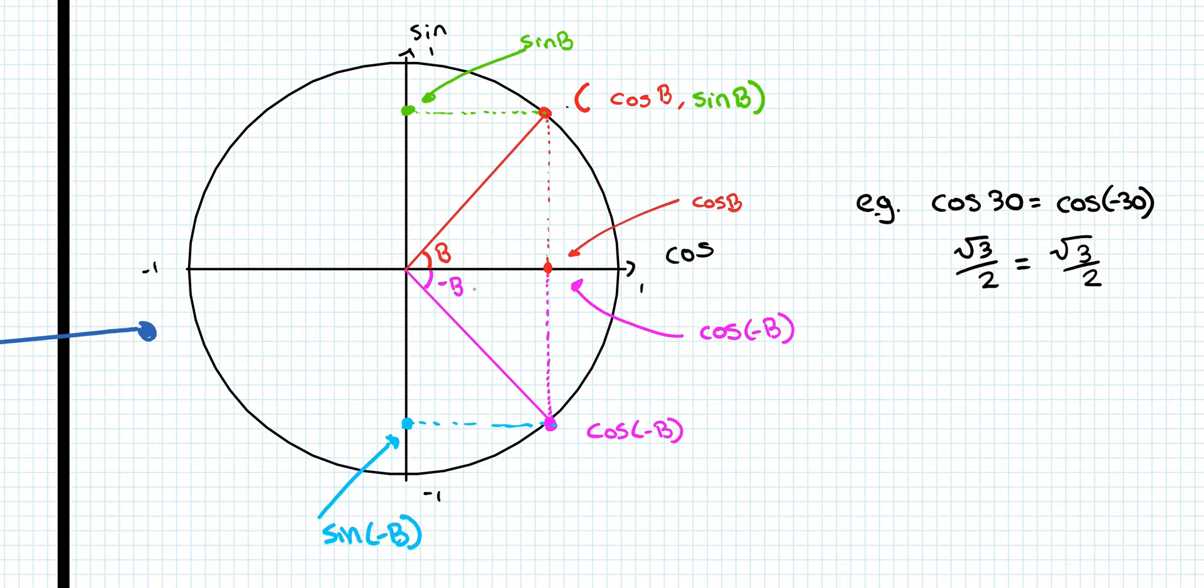In purple I have minus B, the angle (-B) drawn in. Minus B is always measured from the positive side of the x-axis. So the minus would be down here. And then the cos(-B) is straight up to the x-axis. And we'll find that they are the same point. So we get cos(B) is equal to cos(-B).